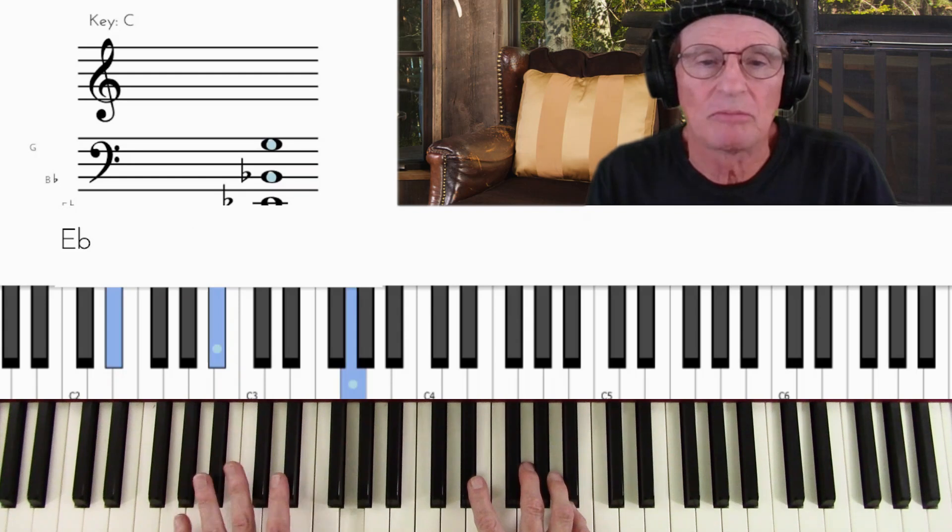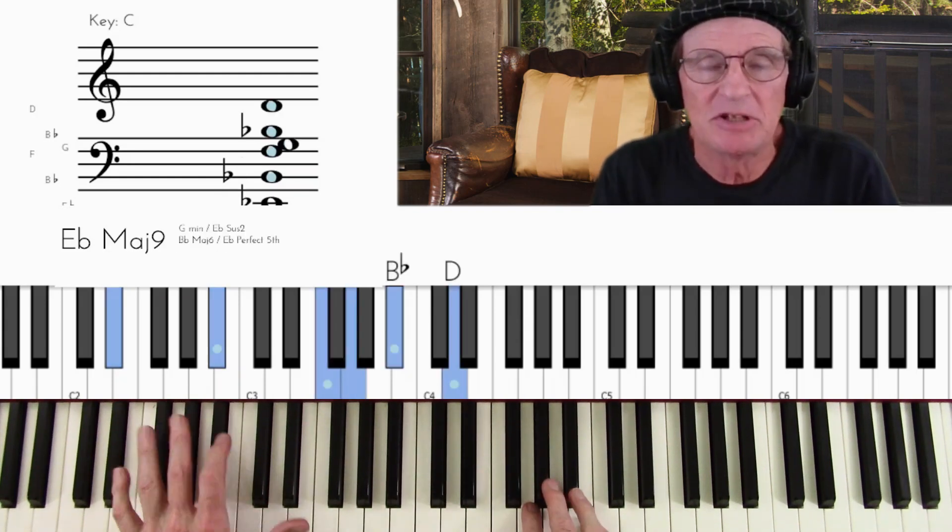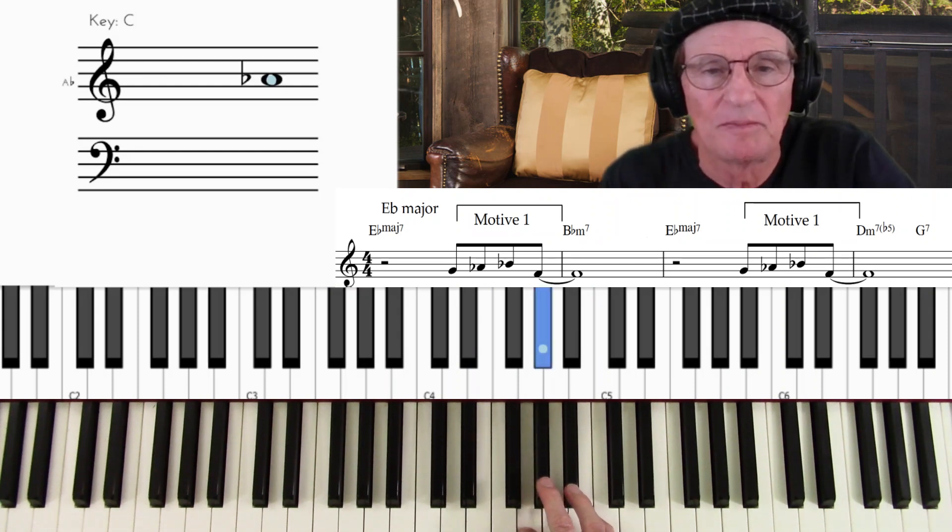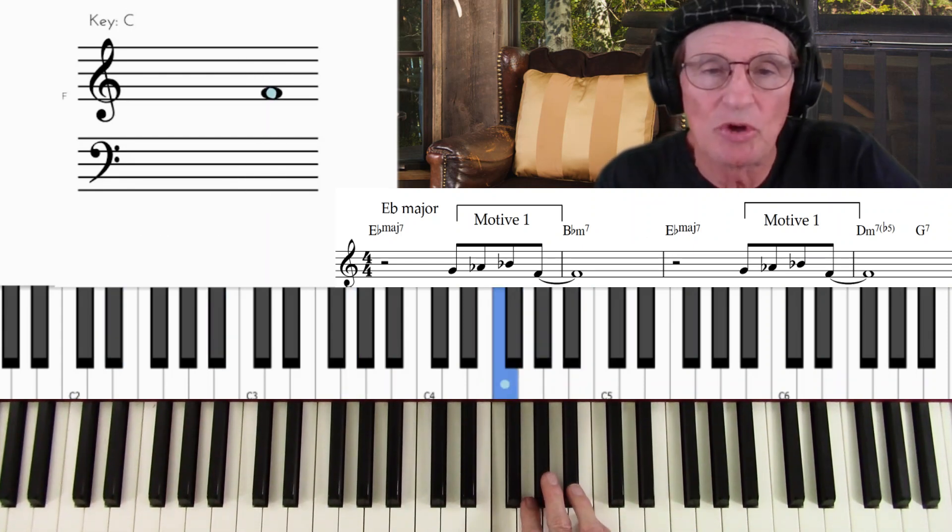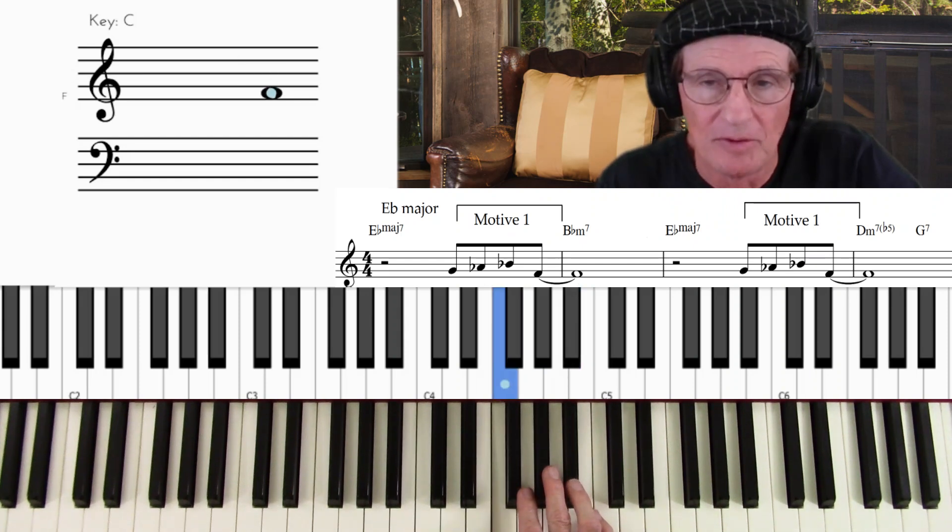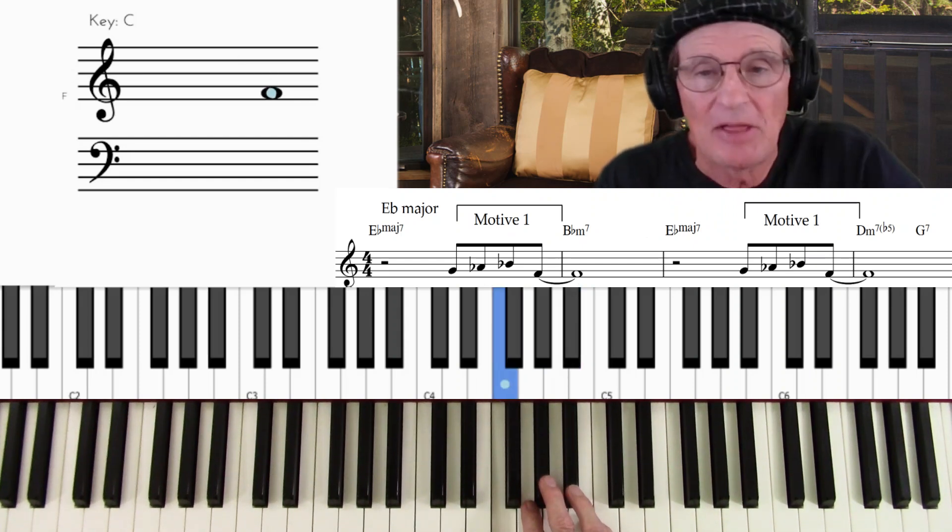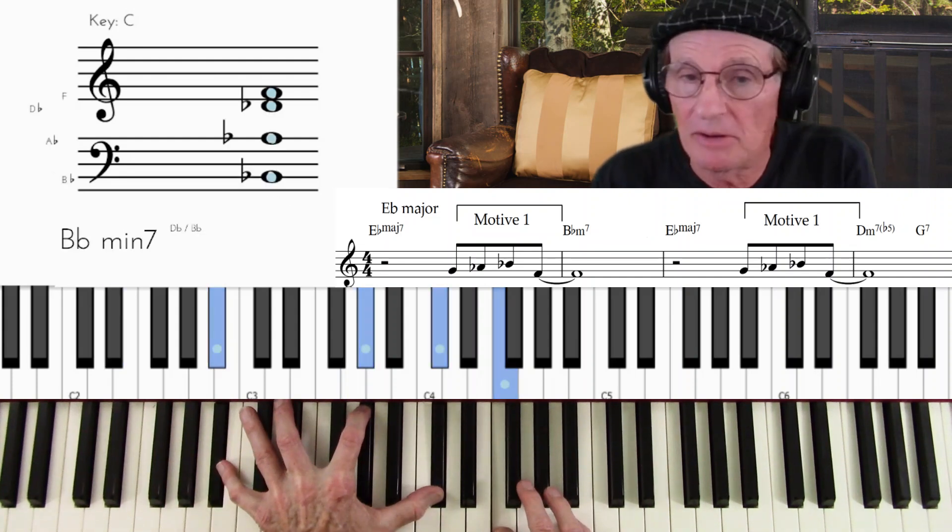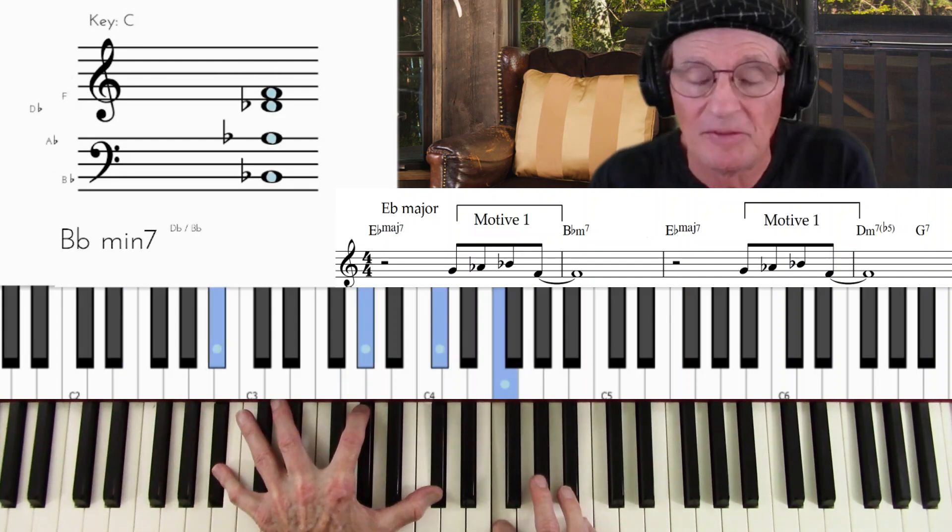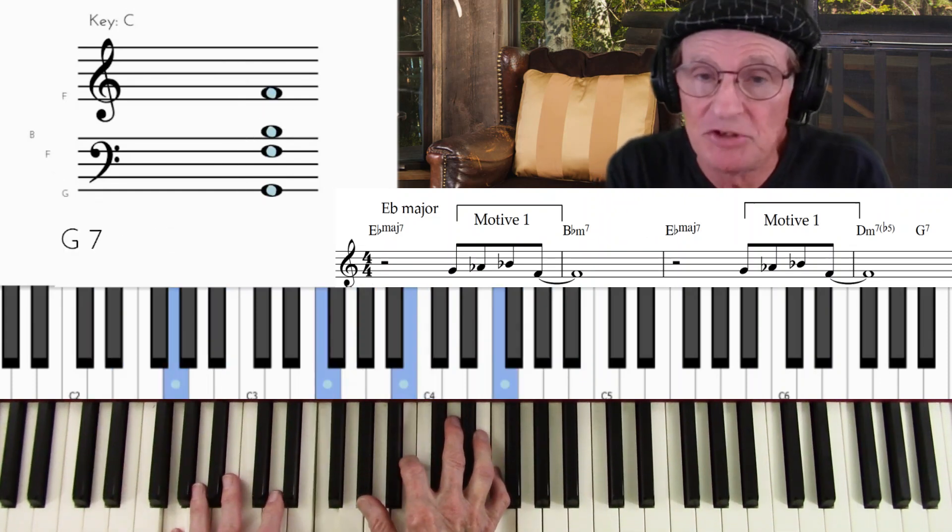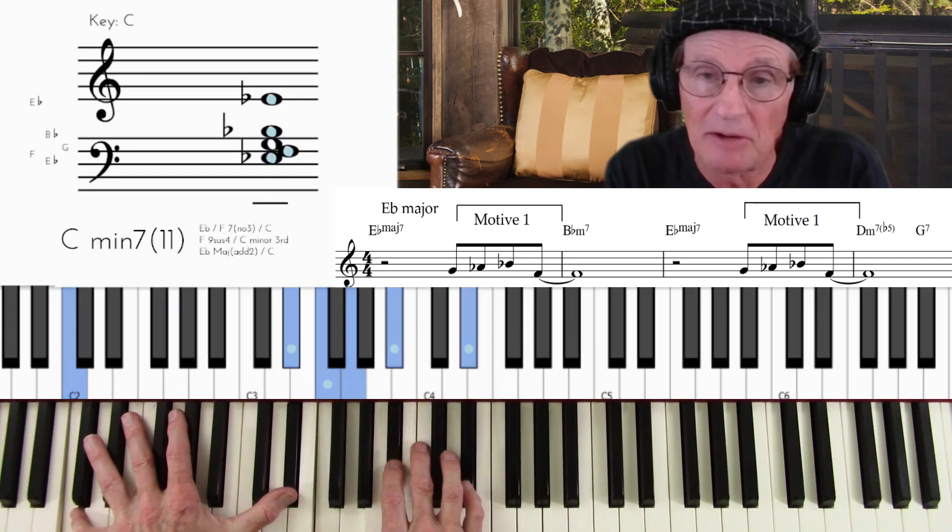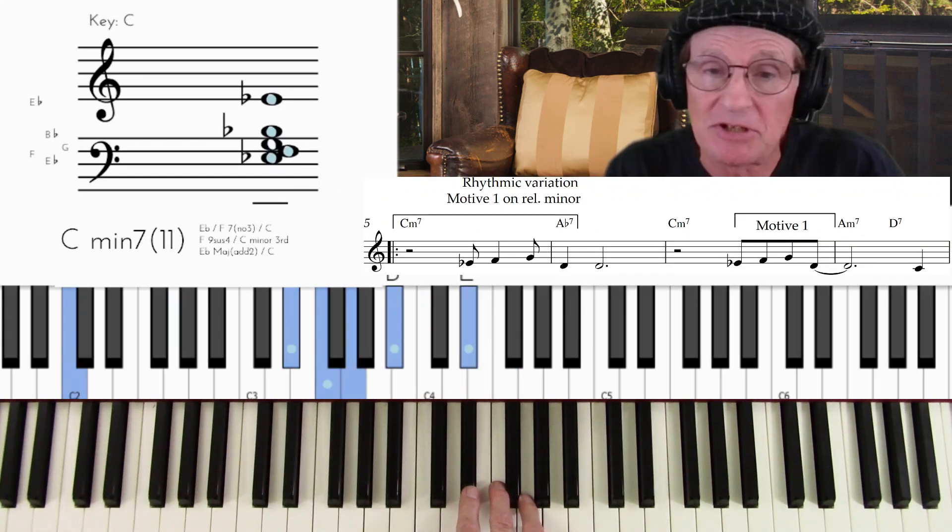So here we go. Now the first motive starts on the E-flat is this. So it's a rising line in eighth notes. Those are all eighth notes. Now it starts on the third of the chord, three, four, five, two. So it ascends up the scale, and then down a fourth to the two. Now that phrase, it goes E-flat to B-flat minor, okay? Then back to E-flat. Then down a half-step, D minor, seven-flat-five to G7, which takes us to the relative minor, C minor.